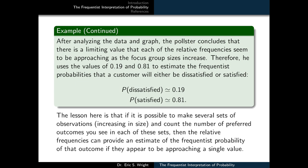The pollster recognizes the same thing. After analyzing the data in the graph, the pollster concludes that there is a limiting value that each of the relative frequencies seem to be approaching as the focus group sizes increase. Therefore, he uses the values of 0.19 and 0.81 to estimate the frequentist probabilities that a customer will either be dissatisfied or satisfied.